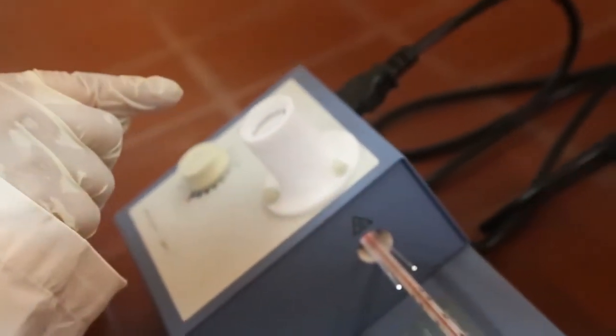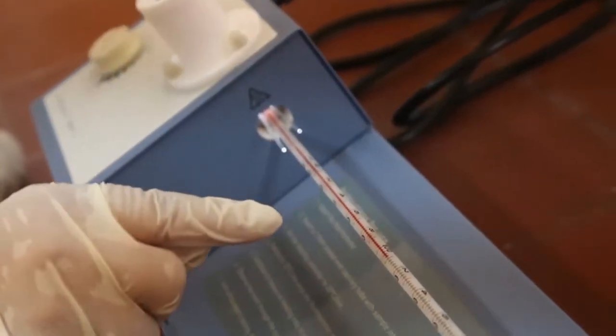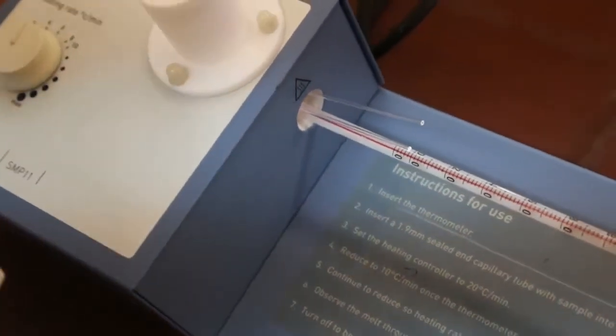Now, the acetanilide has started to melt, for example, at 106 degrees. This is the start of the range. When the total solid will be transformed into liquid, as you will see now, it will be the end of the range.